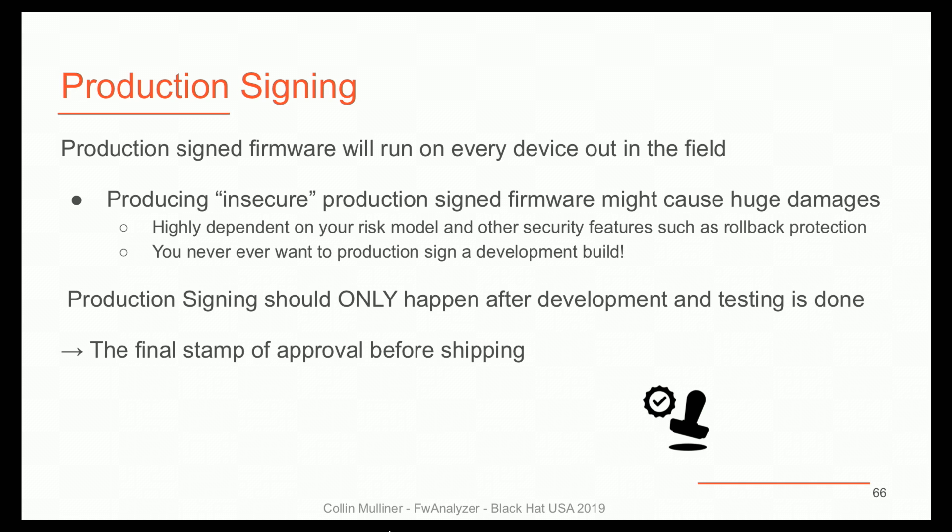Production signing. When you sign a firmware with your production keys, it will run on every device of that specific class you've ever shipped. You really don't want to sign something that is insecure — it might cause huge damage. Of course you can have things like rollback protection, but everything really depends on how your products work. You want to do production signing after you have completed testing and development — that's basically the final stamp of approval before you ship. What do you want to check? You want to make sure you have a production build, the right certificates, all hardening features on, no development tools, and your production configuration files.